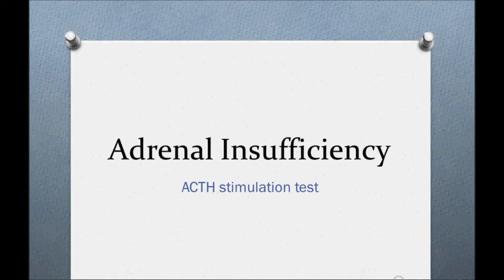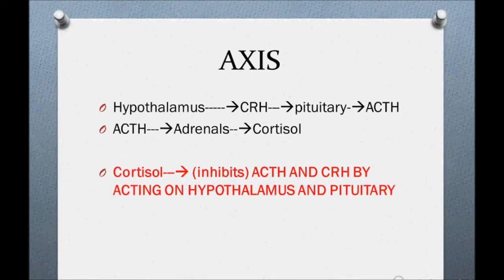The ACTH stimulation test is the definitive test for adrenal insufficiency. Before understanding adrenal insufficiency, we need to know the HPA axis: the hypothalamus secretes CRH, which stimulates the pituitary to secrete ACTH. ACTH then stimulates the adrenals to secrete cortisol. Cortisol has inhibitory feedback — it inhibits secretion of ACTH and CRH by acting on the hypothalamus and pituitary.